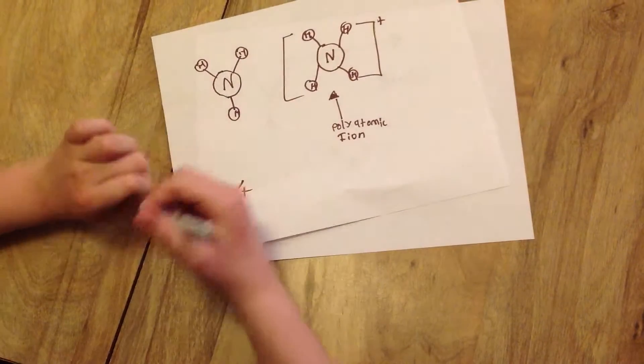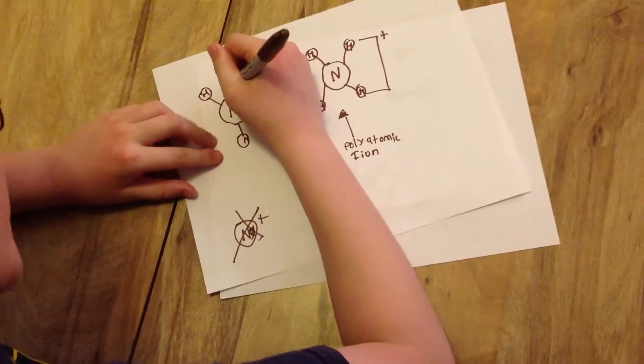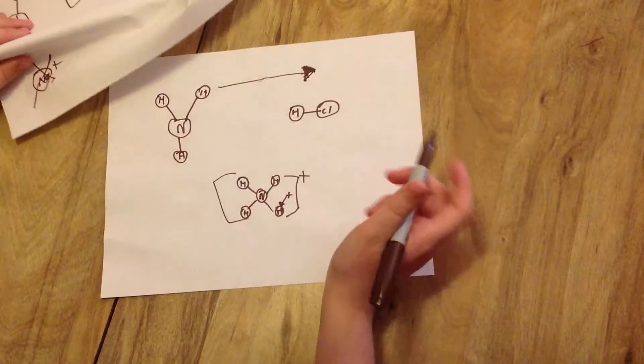But ammonia is still a very special compound itself, as it's produced by the Haber process.